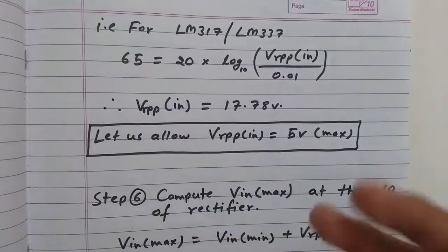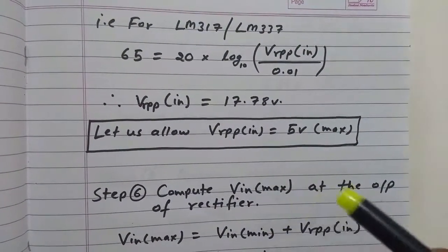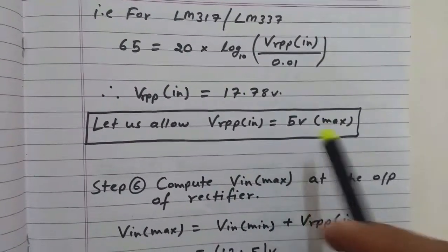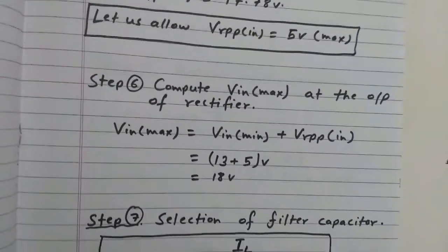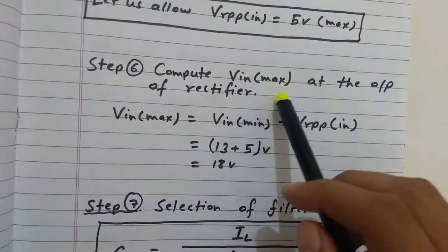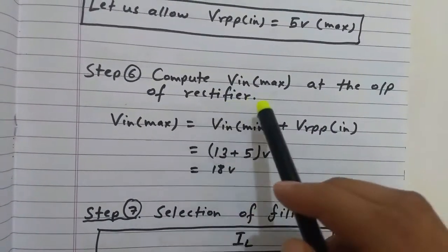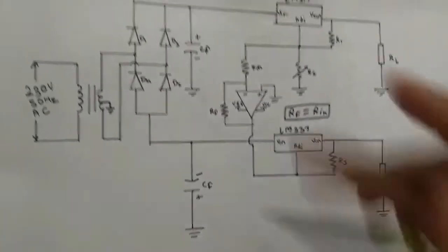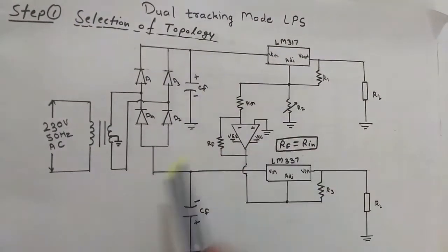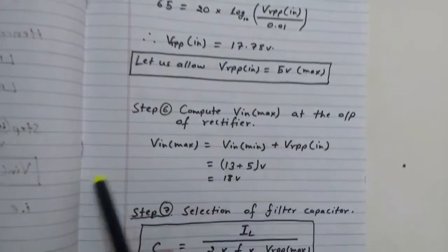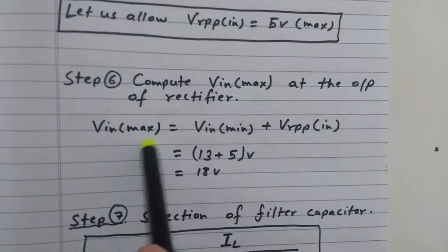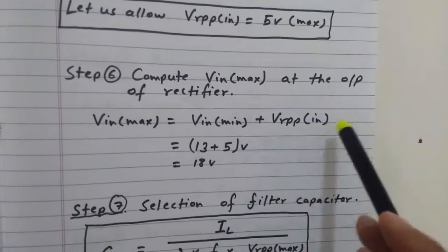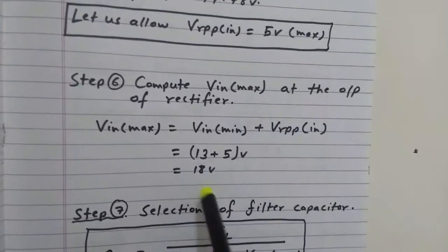We take a moderate value of V_ripple(p-p) input as 5 V. Then V_in(max) at the output of the rectifier equals V_in(min) + V_ripple(p-p) input = 18 V.